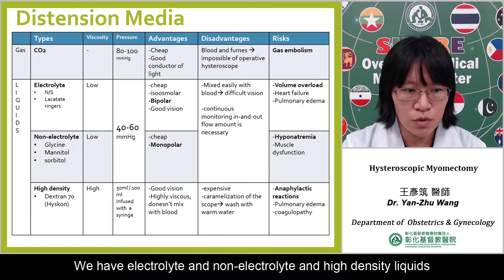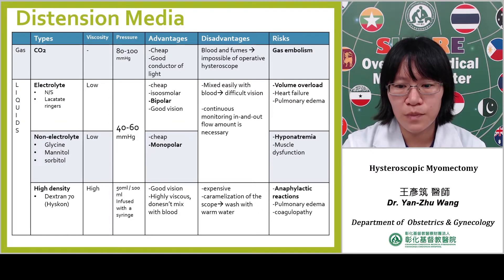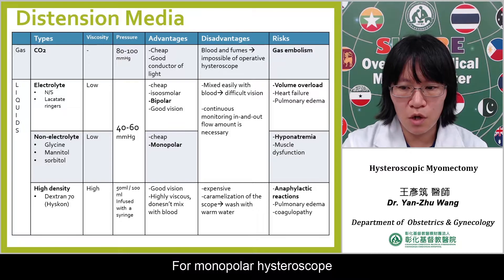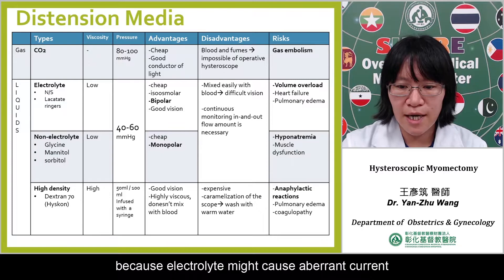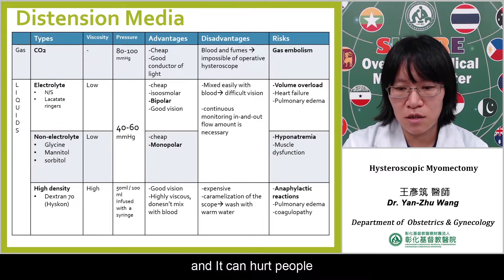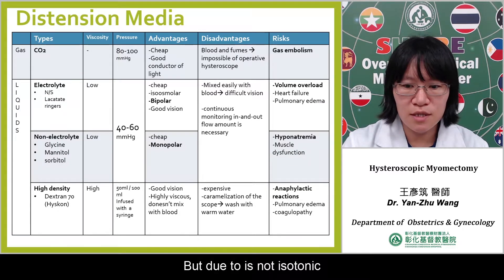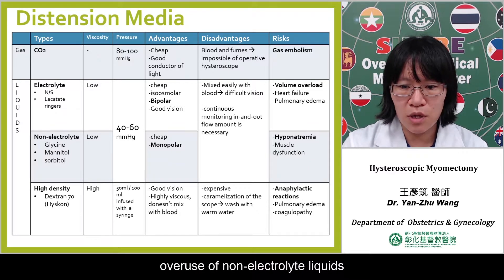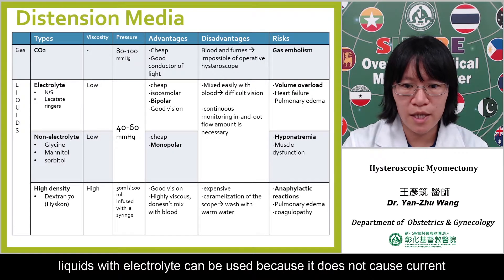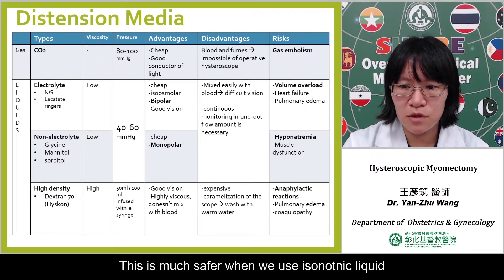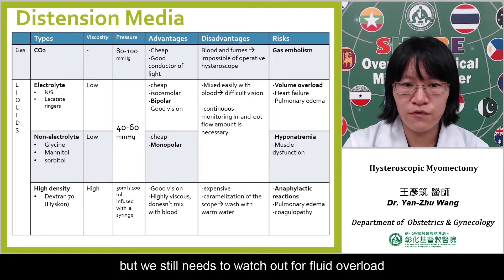We have electrolyte, non-electrolyte, and high-density liquid. For monopolar hysteroscopy, we can only use non-electrolyte liquid such as glycine, because electrolytes might cause aberrant currents and can hurt people. But because it is not isotonic, overuse of non-electrolyte liquids can cause severe hyponatremia. While using bipolar scope, liquids with electrolytes can be used because it does not cause aberrant current. It is much safer when we use isotonic liquid, but we still need to watch out for fluid overload.